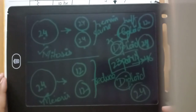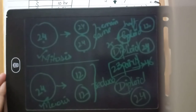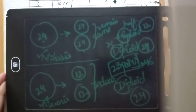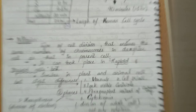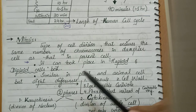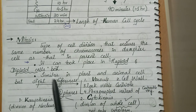In any animal, plant, or organism, there are two types of cells. We have seen these two terms — haploid and diploid. Mitosis can take place in both haploid and diploid cells.